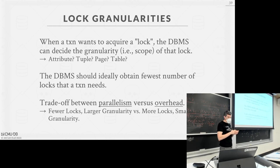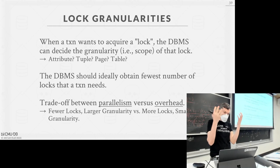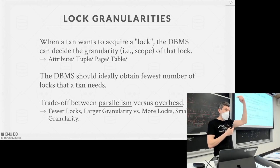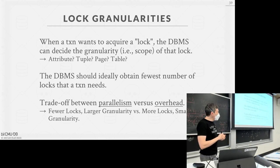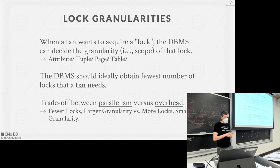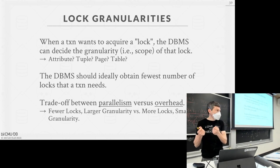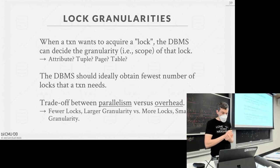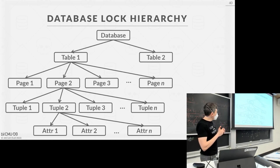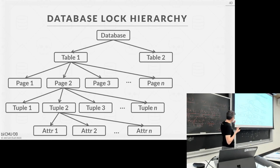What we can do is have a notion of a hierarchy in our database, where we have higher-level objects with a larger scope. We acquire locks at the higher-level objects, and that implicitly acquires locks for the things below it. The goal is for the database system to acquire the fewest number of locks needed for a transaction to run correctly, with the lowest overhead. We organize the database into a hierarchy: database → tables → pages → tuples → attributes.